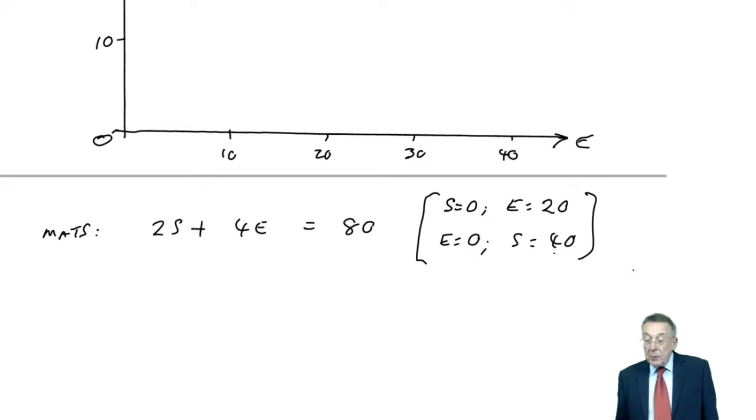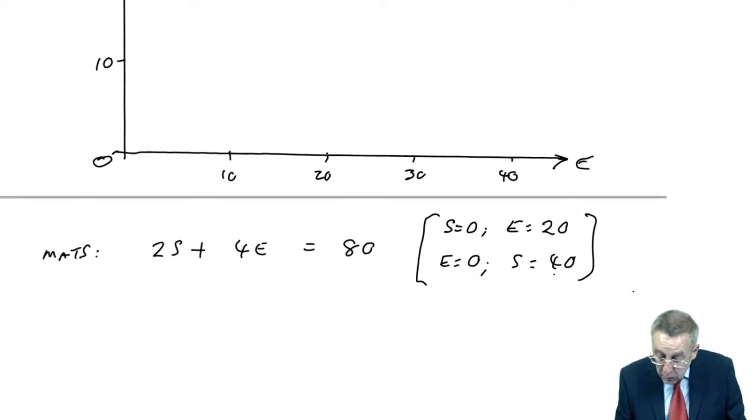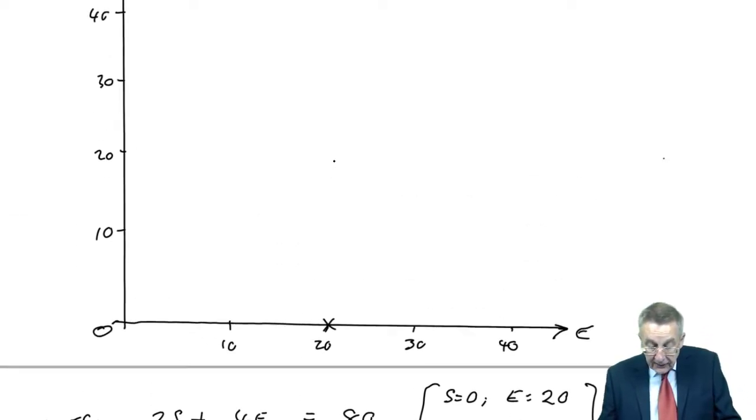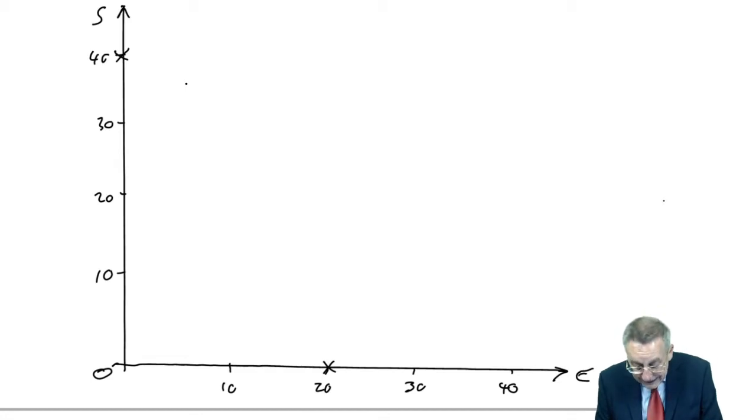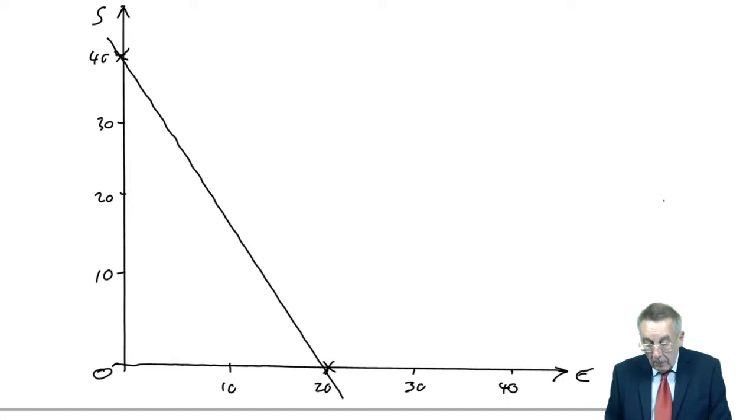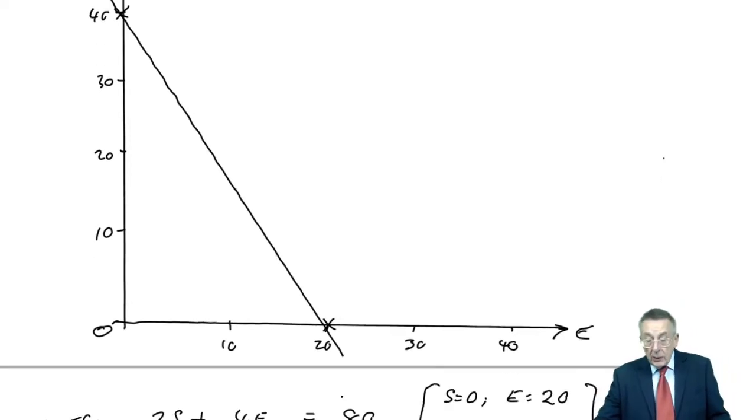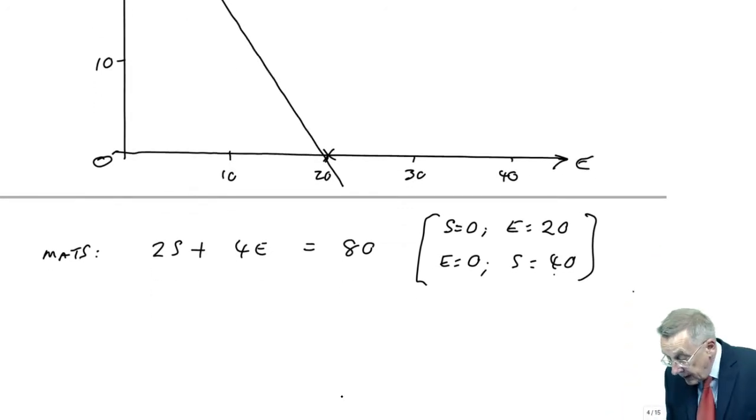So let me put those two points on the graph. S 0, E 20 is there. E 0, S 40 is there. And if I join them up, I'll try and be neat. Now, there's the graph of that equation, and it was materials, so I will label it materials.